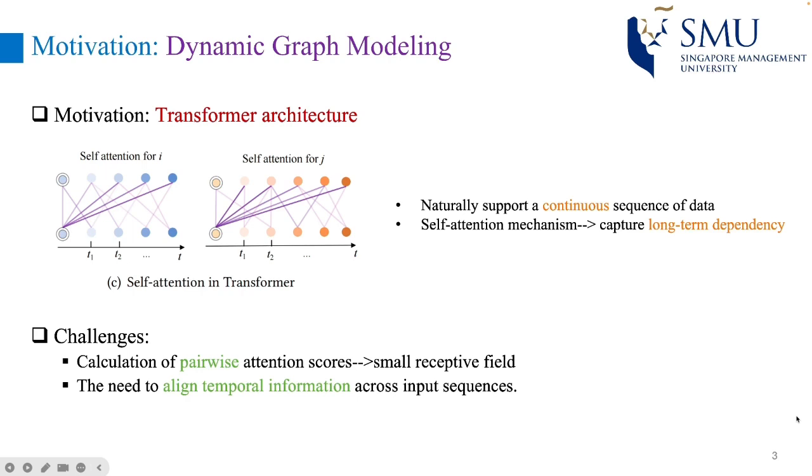There are two challenges to use transformer for dynamic graph modeling. The first challenge lies in the need to preserve the historical evolution throughout the entire timeline. The second challenge lies in the need to align temporal information across input sequences.